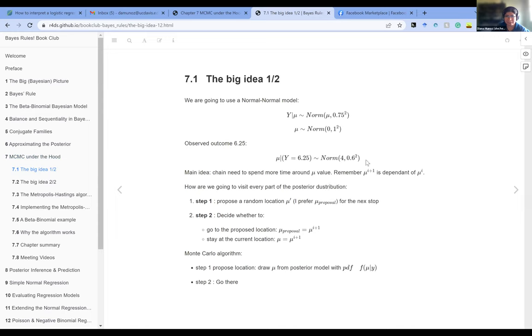Our goal is to approximate the posterior distribution. To do this, we want our Markov chain to spend more time around the mean value, with each new value being dependent on the previous value. We start the chain at one location and then we propose a new random location, theta prime, for the next stop. The chapter describes this as sort of being the tour guide for the chain. Once you propose this new location, you need to decide whether to go to the new proposed location or stay at the current location.